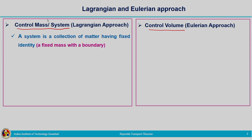A system is a collection of matter which has a fixed identity — that is, it is a fixed mass with a boundary. In the Lagrangian approach we are tracing the fluid particle, whether it is an individual particle or a number of particles together. We are tracing the flow path of these individual particles from the beginning to the destination.